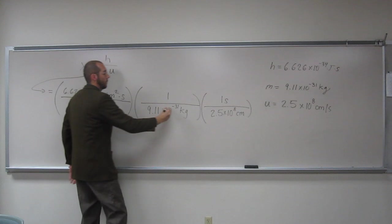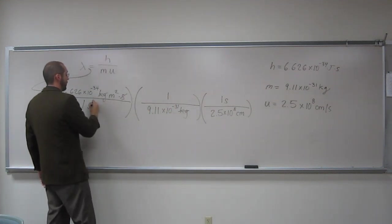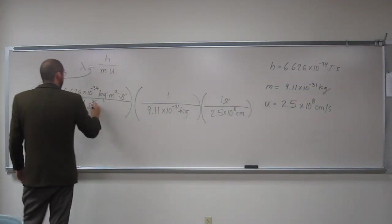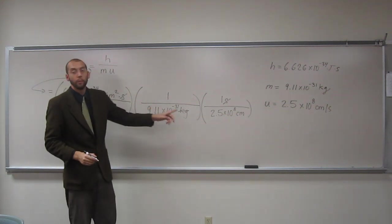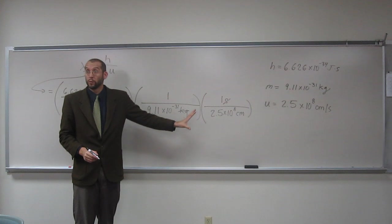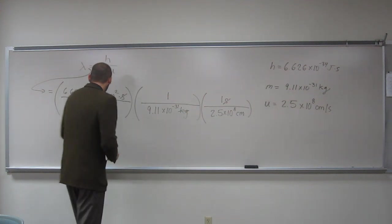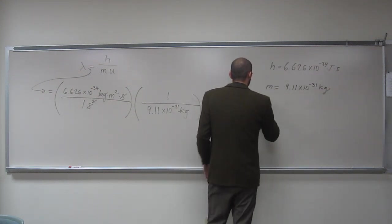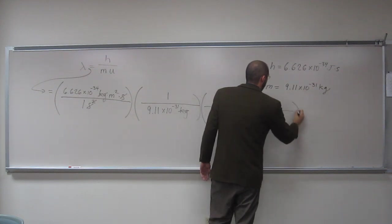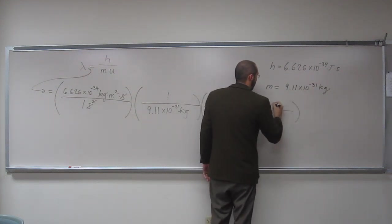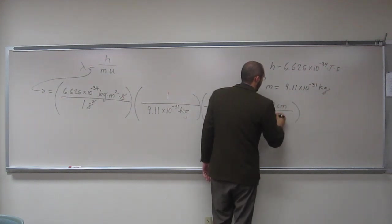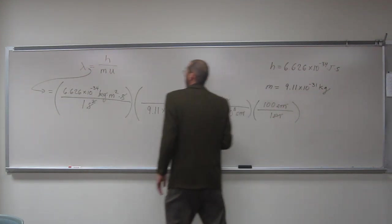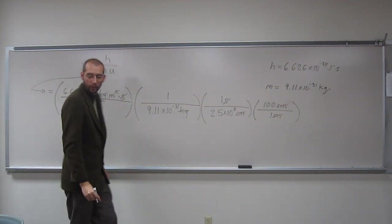So kilograms with kilograms. Seconds with one of the seconds. The other seconds here with the other seconds here. Now we've got meters squared divided by centimeters, right? So we're going to have to convert the centimeters to meters. So let's do that. You guys remember how many centimeters there are in a meter? 100. Okay. 100 centimeters, one meter. So cancel, cancel, right? Cancel meters with one of the meters.